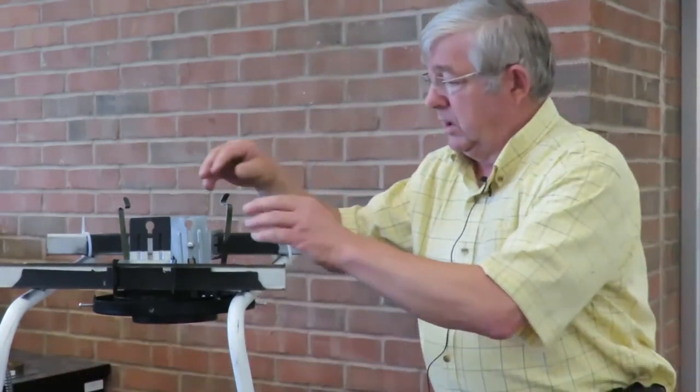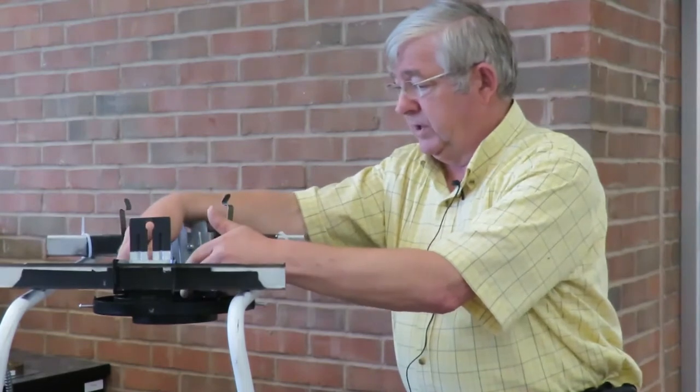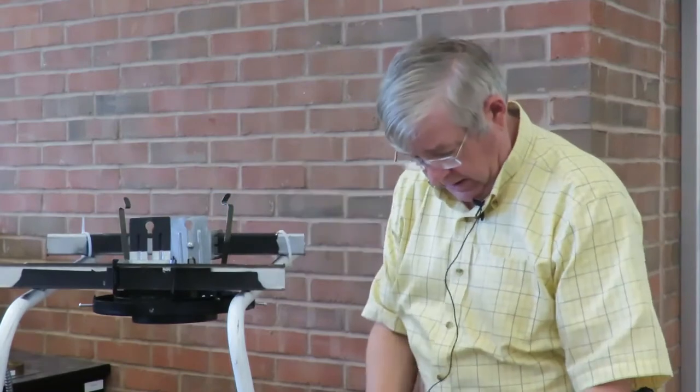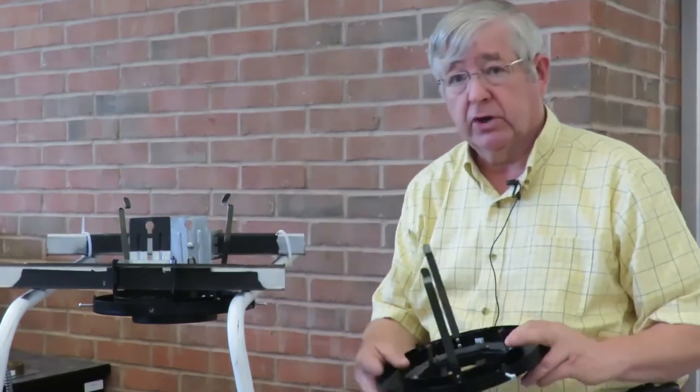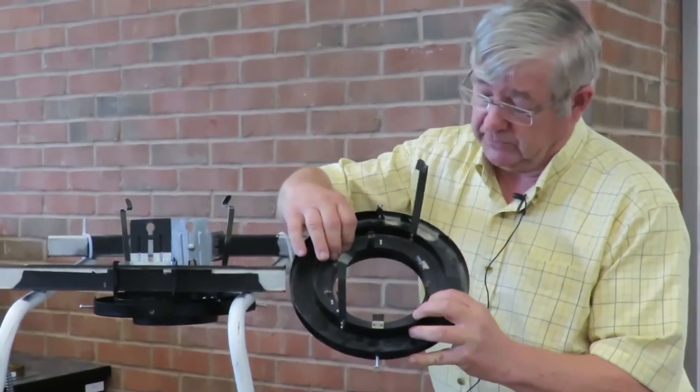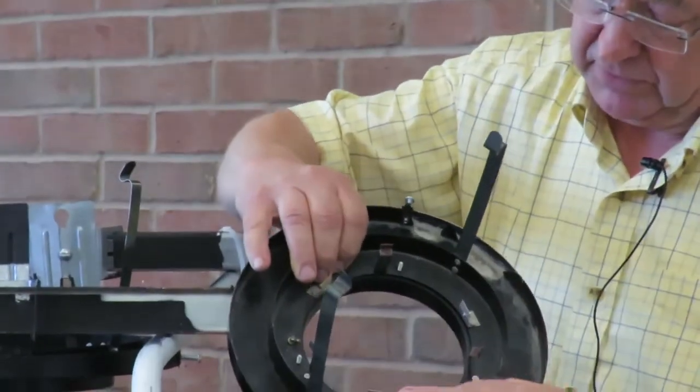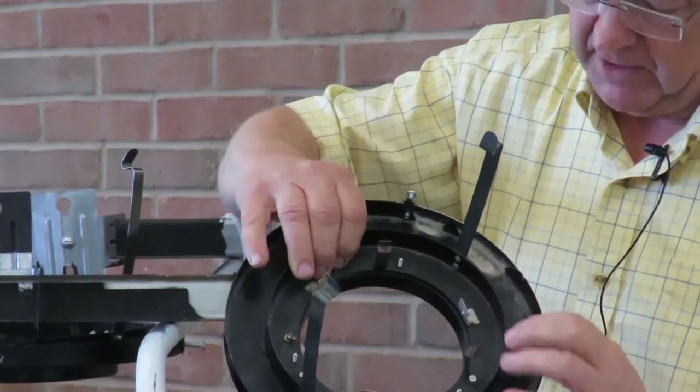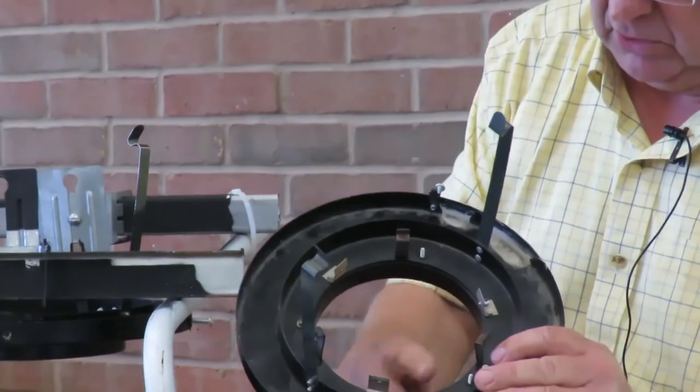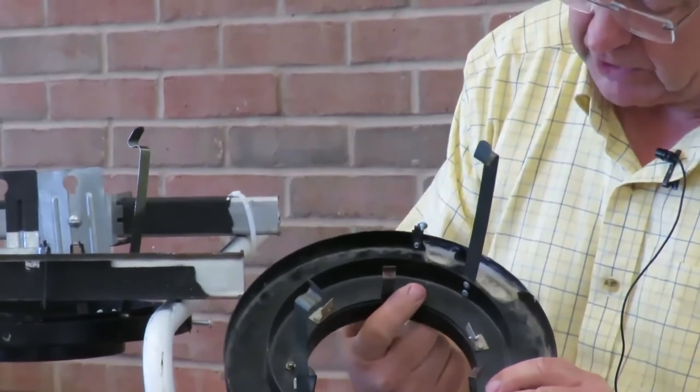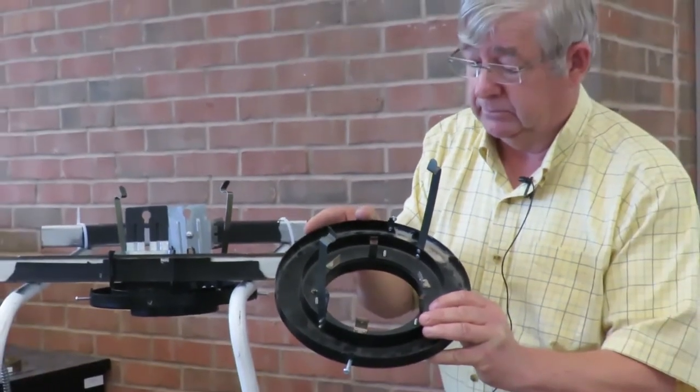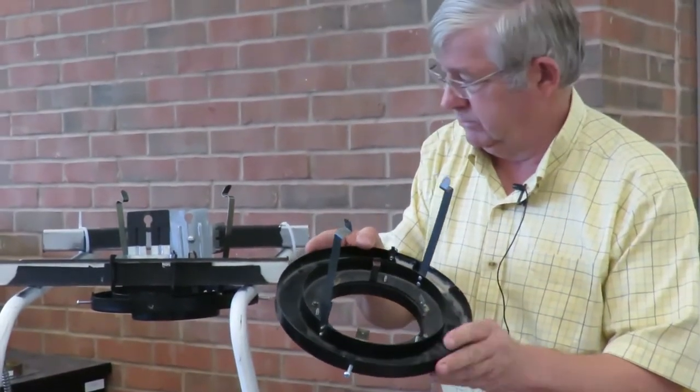Now our next step is to remove the center support section. Let me hold this up to the camera so you can see what I have. Inside the fixture there's this support ring that has to come out. There are three screw posts that hold it in place, and that's held in place by three wing nuts.